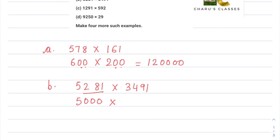For 3491, this number is between 3000 and 4000, and 3500 is the middle. Since 3491 is closer to 3500 and rounds down, it is closer to 3000. So our estimate is 5000 × 3000, which is 15 followed by six zeros, giving us 15,000,000.